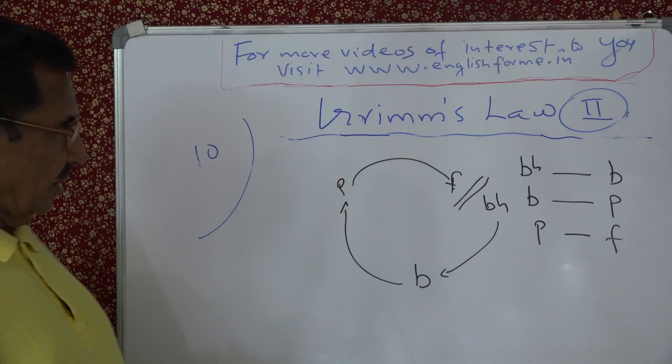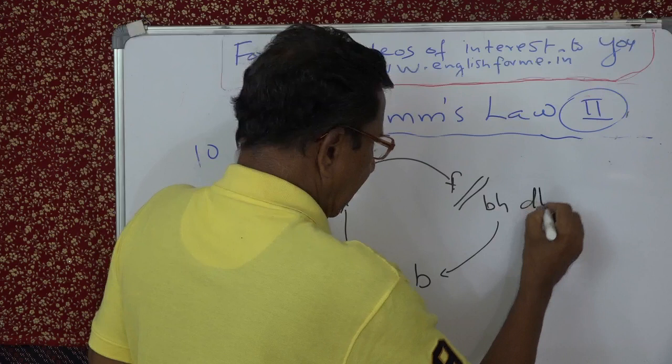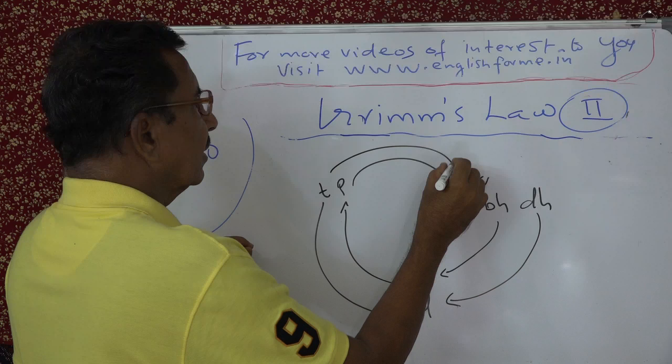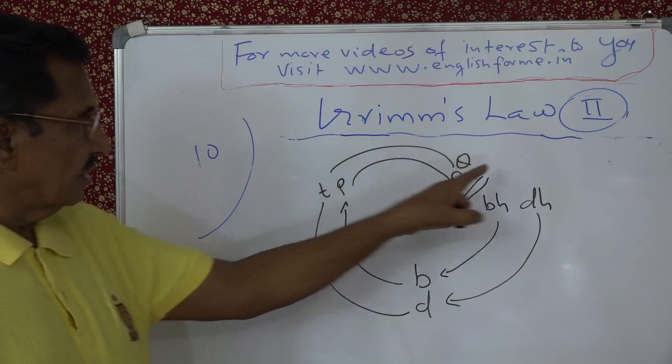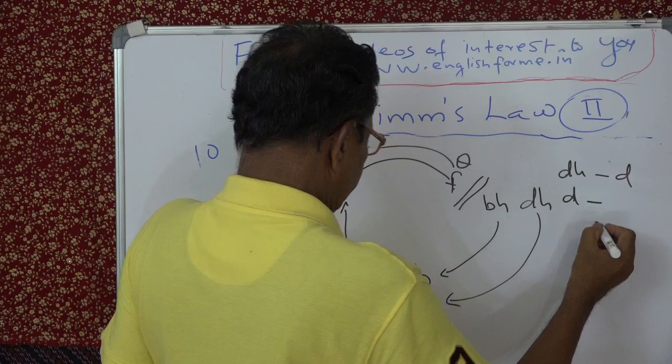The next series: Dh. What happens to Dh? First it becomes Dh (voiced), then it becomes T (voiceless), and then it becomes Th. So the circular relationship for the dental series is: Dh → D → T → Th.